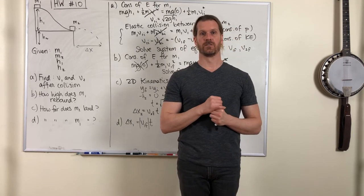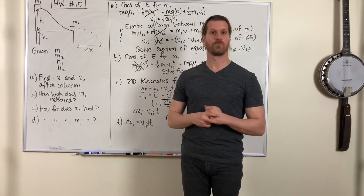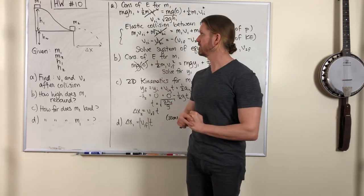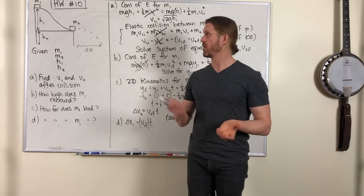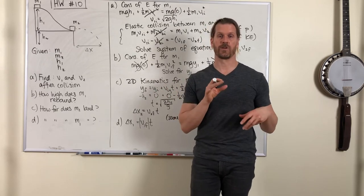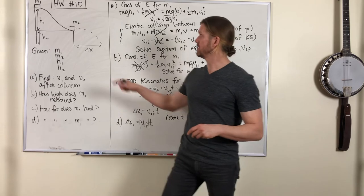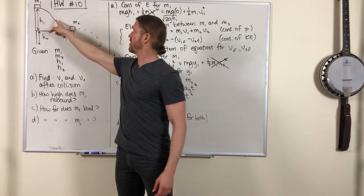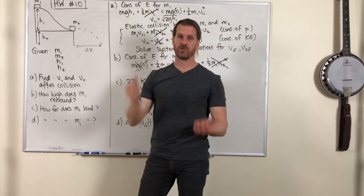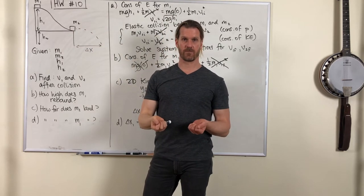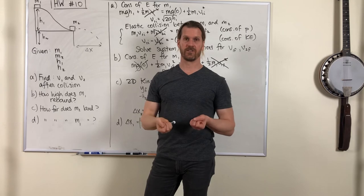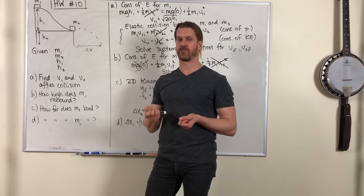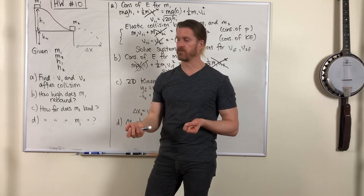And like in problem 10, homework problem number 10, this was another problem where we had several different parts of the motion. Like we had the part where block M1 is sliding down the ramp and we can use conservation of energy there because no collision has occurred yet. It's just falling under the influence of gravity.